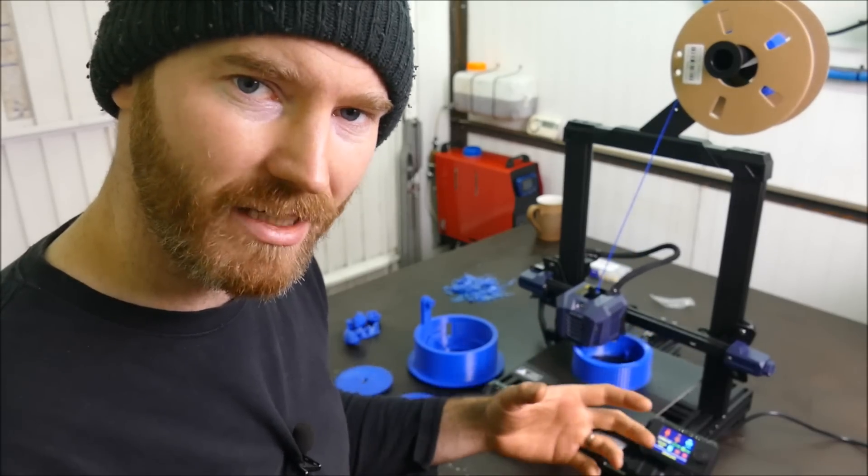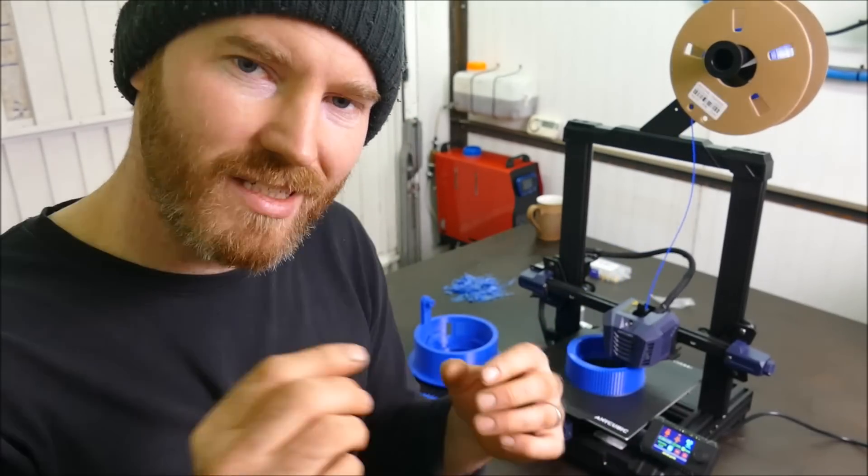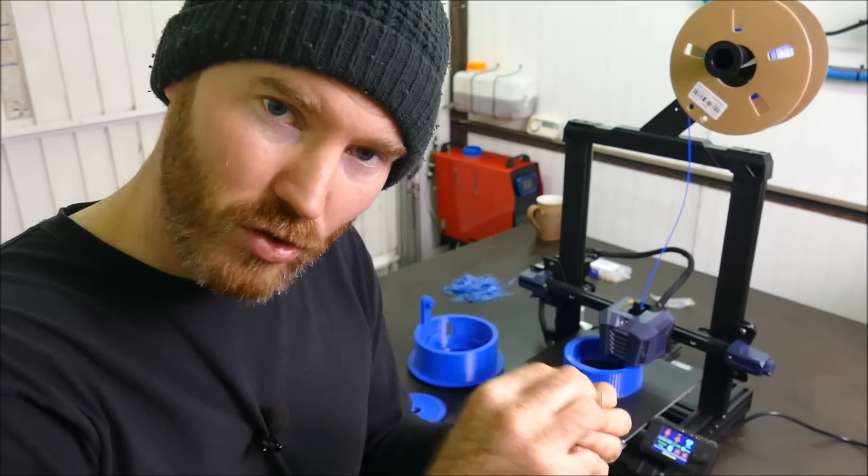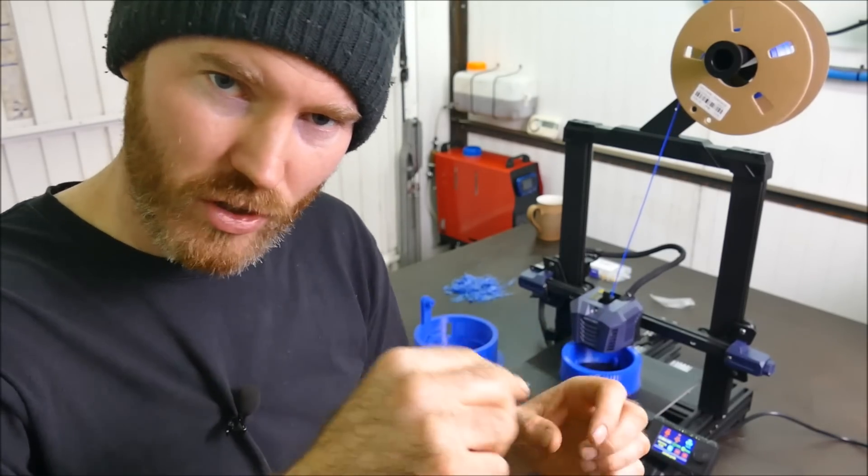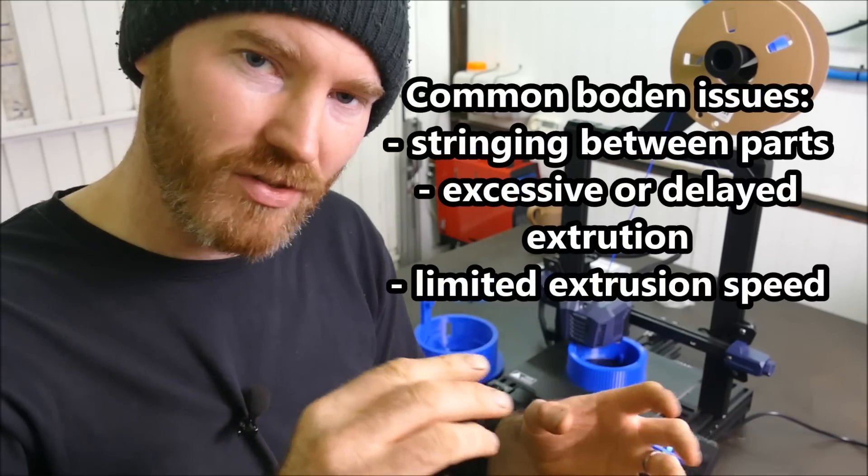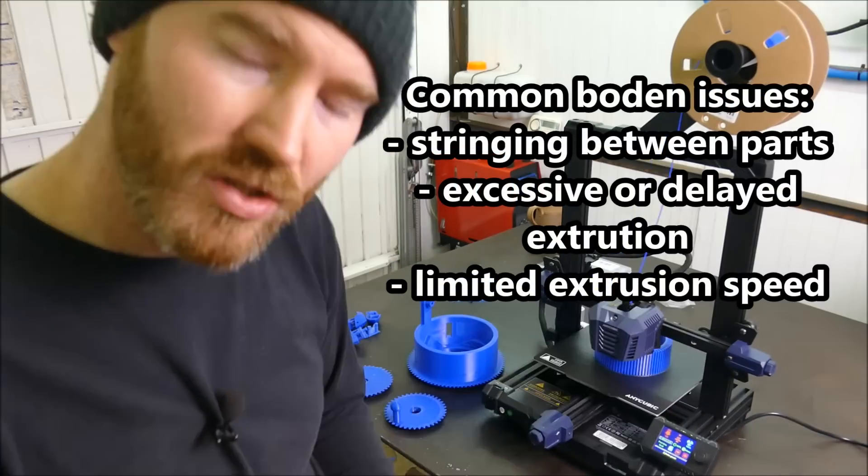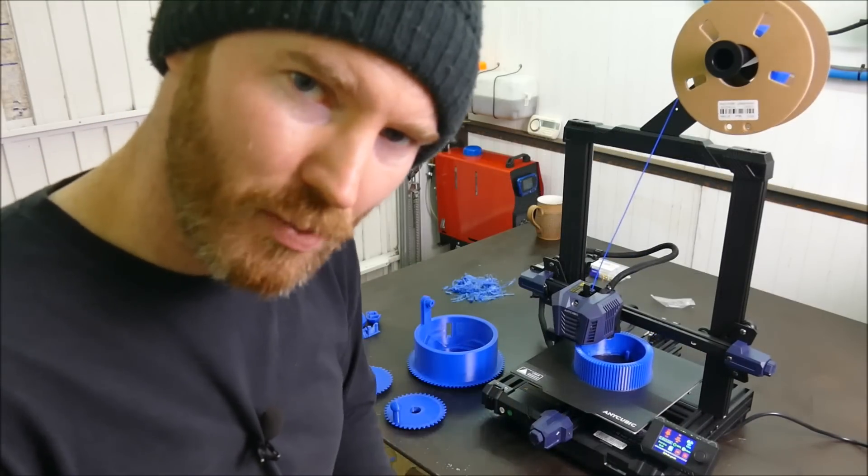A lot of other printers, including the Ender 3, use a Bowden system. Typically with those materials, you need quite a bit of retraction. And the problem with Bowden systems is that when they do retract, there's a little bit of flex and give, so you don't get accurate retraction. So a direct drive fixes those problems.